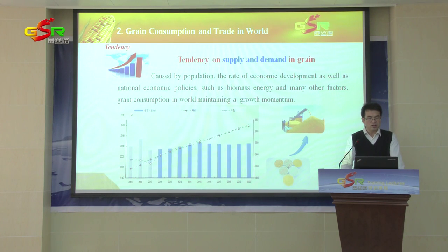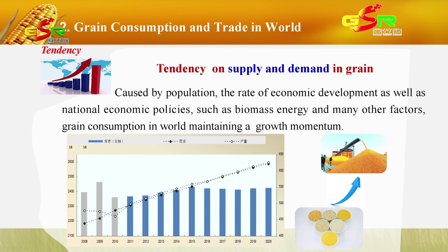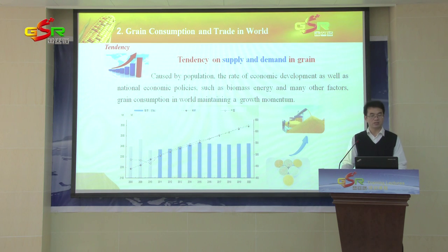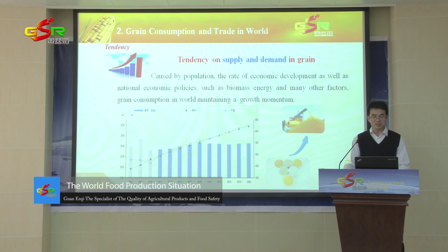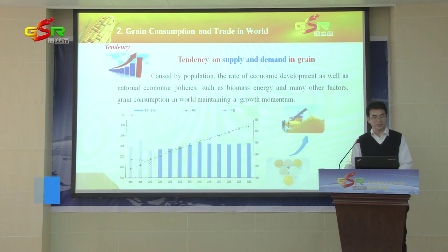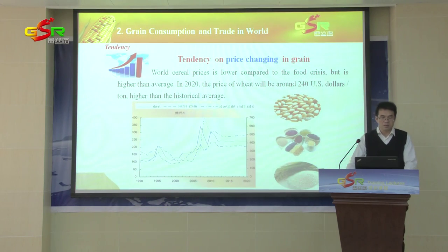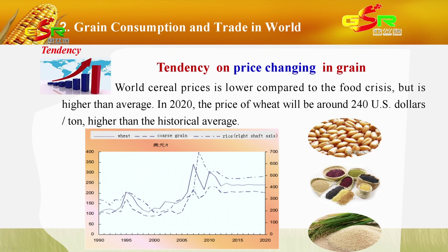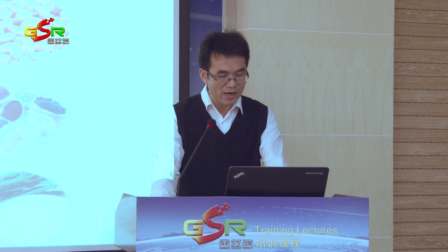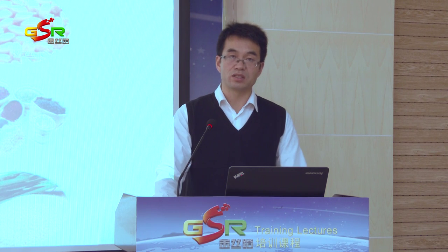Caused by population growth, the rate of economic development, as well as many countries' national economic policies such as biomass energy and other factors, green grain consumption in the world will maintain a growth momentum in the next 10 years. We think that by 2020, the price of grain will be around 240 dollars per ton.